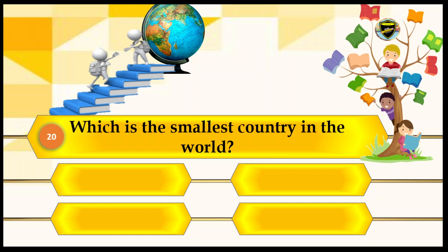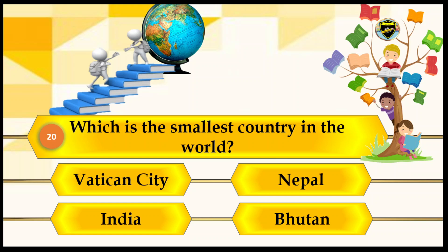Which is the smallest country in the world? Your options are Vatican City, Nepal, India, and Bhutan. The answer is Vatican City. Let's lock it and see if Vatican City is the right answer.